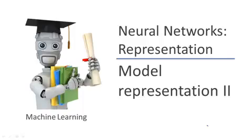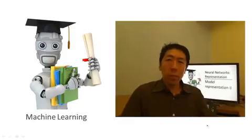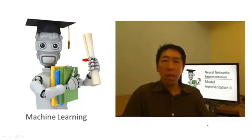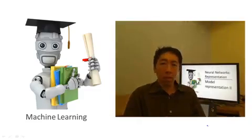In the last video, we gave a mathematical definition of how to represent or compute the hypothesis used by a neural network. In this video, I'd like to show you how to actually carry out that computation efficiently, that is, show you a vectorized implementation. And second and more importantly, I want to start giving you intuition about why these neural network representations might be a good idea, and how they can help us to learn complex nonlinear hypotheses.